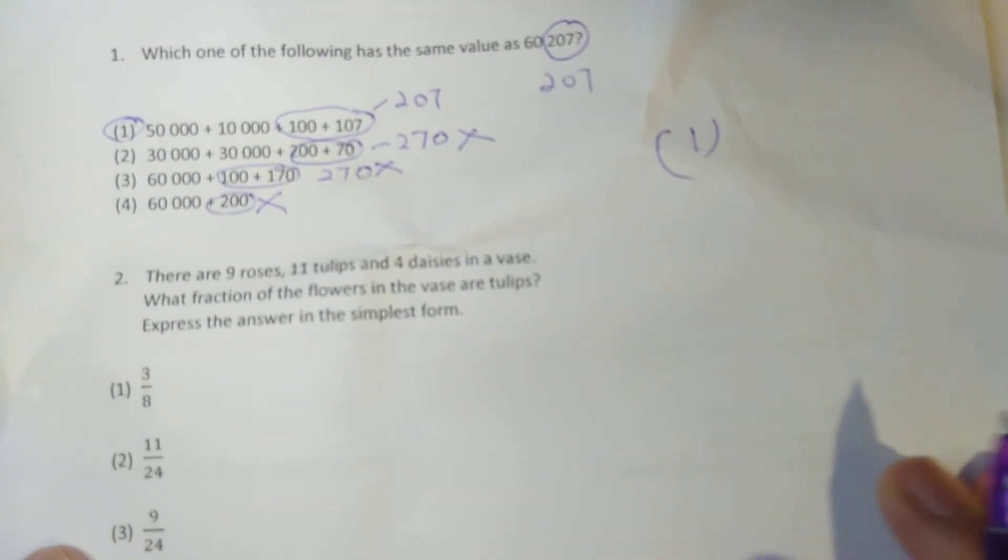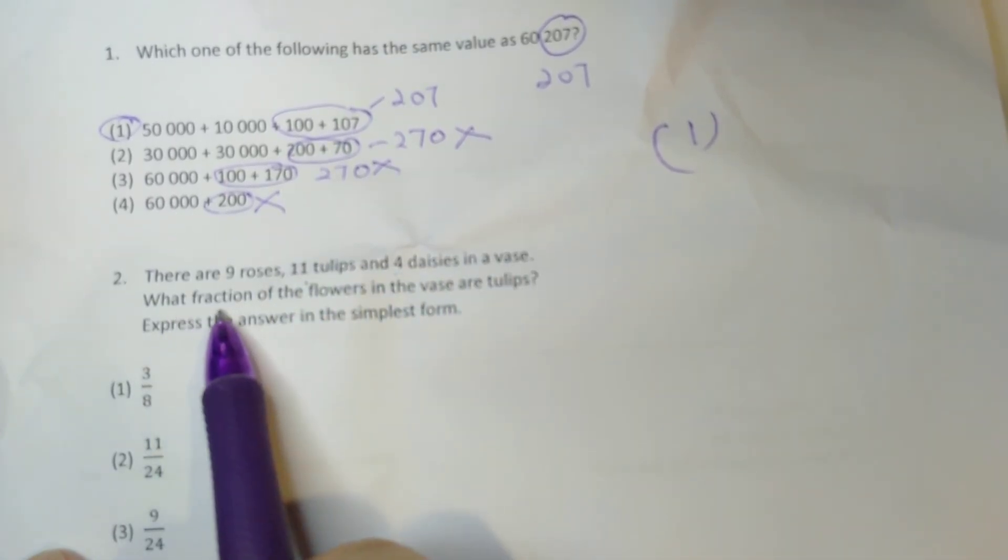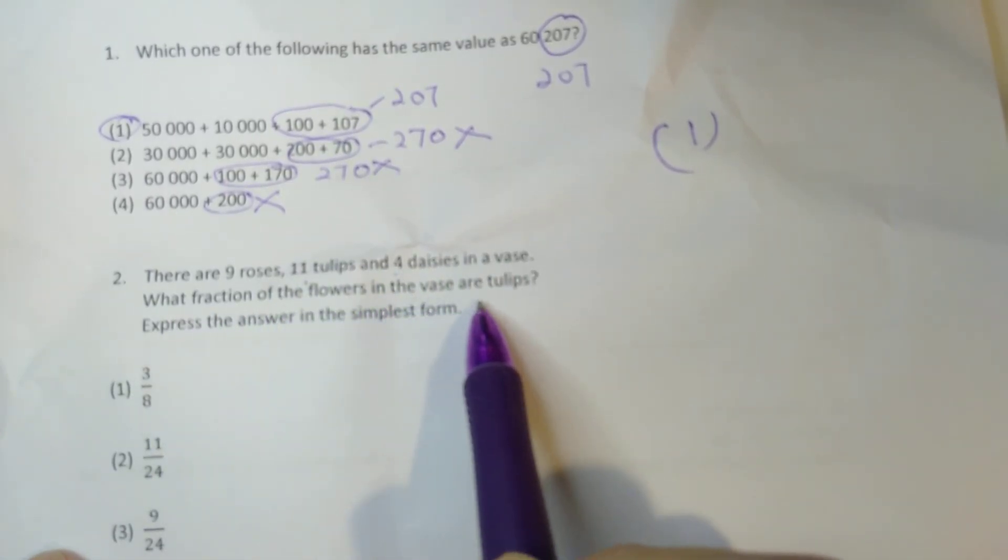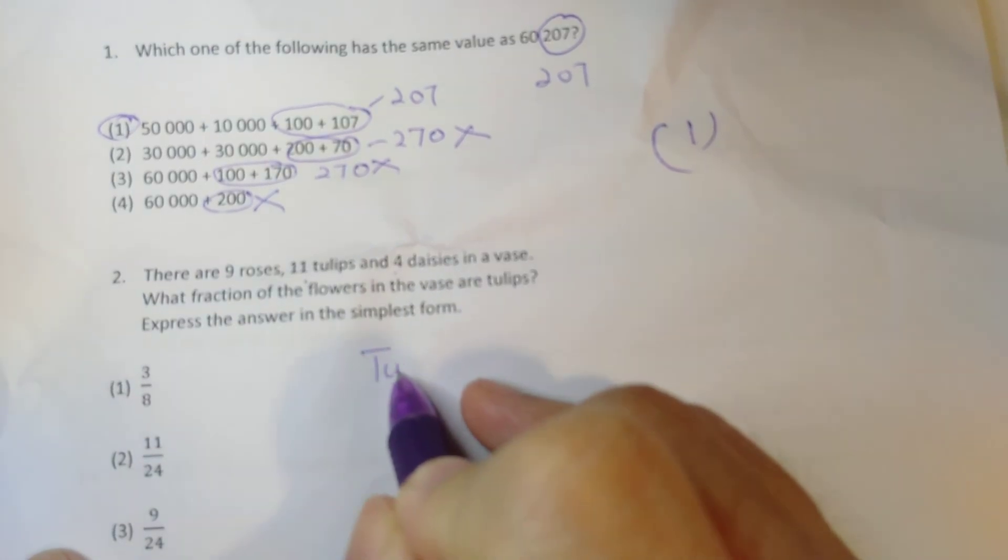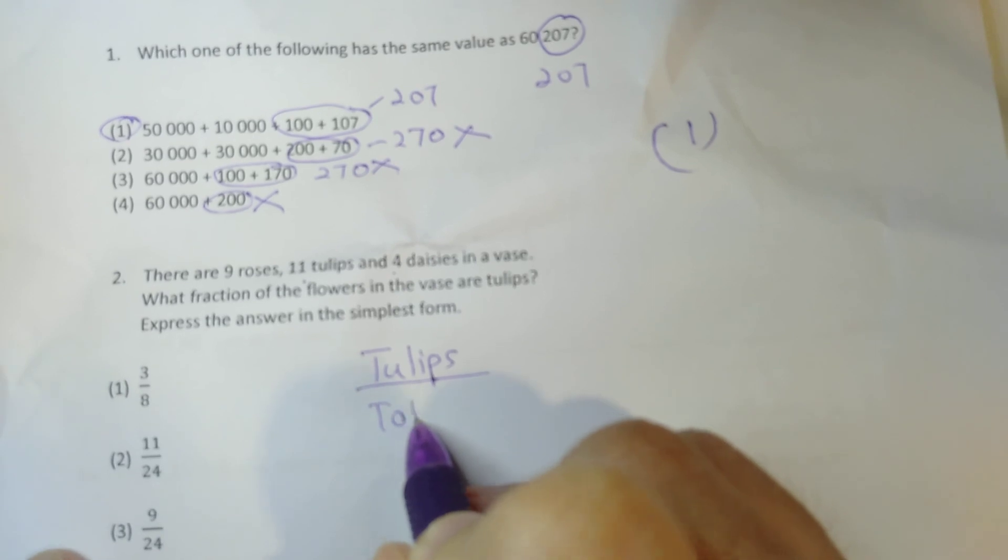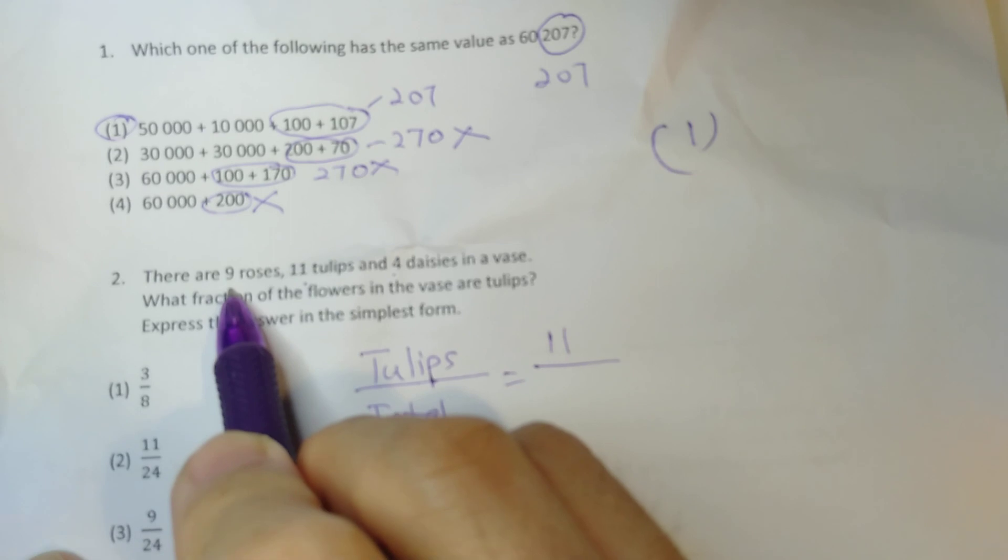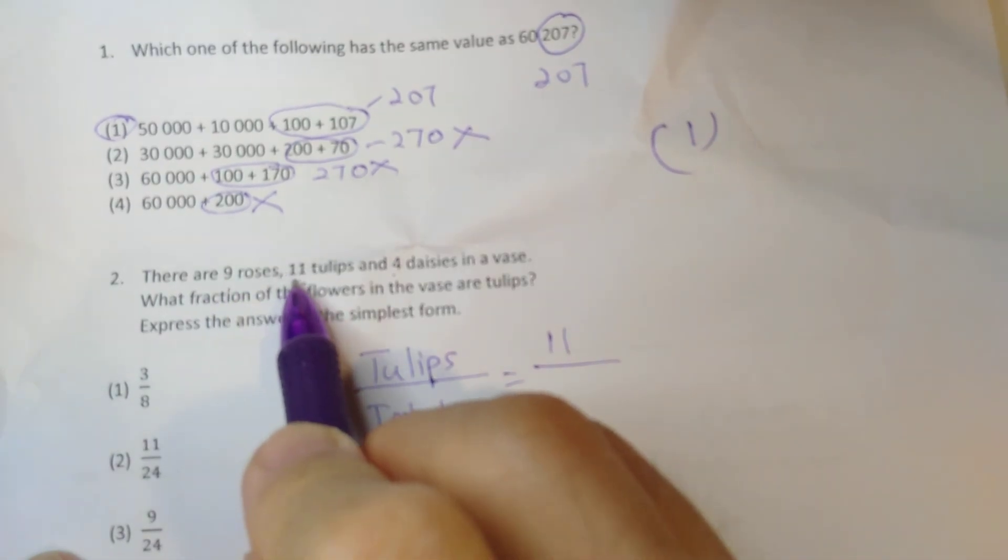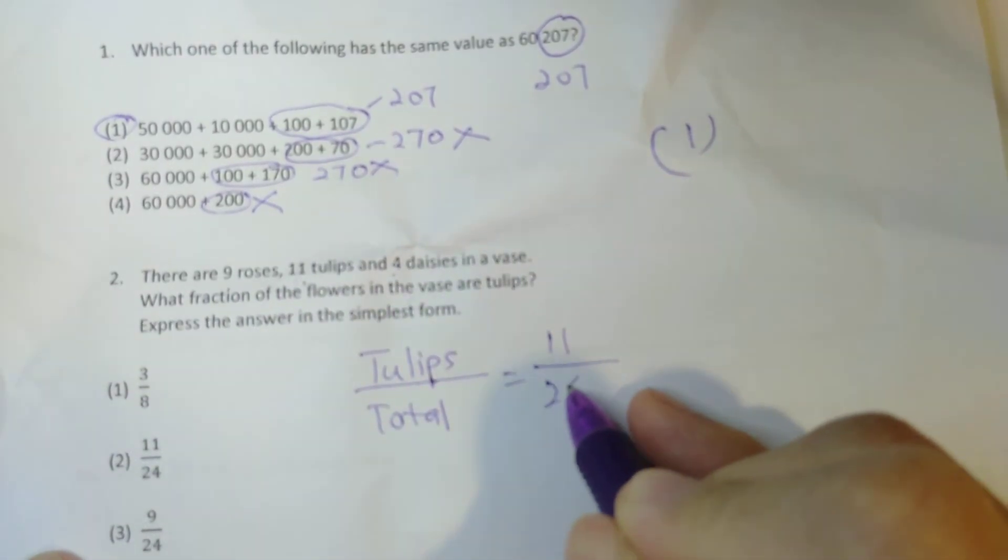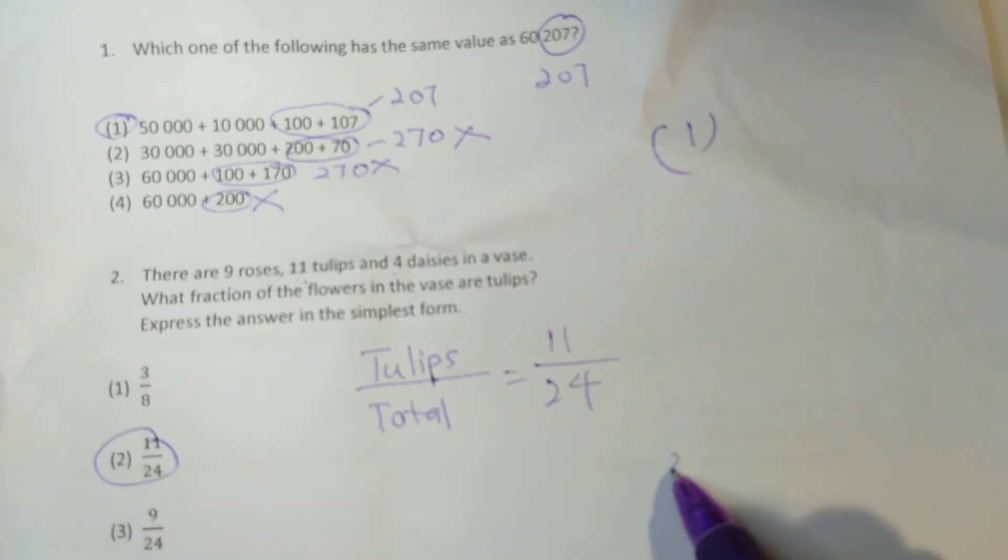Next one. There are 9 roses, 11 tulips, and 4 daisies in the vase. What fraction of the flowers in the vase are tulips? So we're looking for a fraction of the flowers that are tulips over the total number of flowers. There are 11 tulips. And total 9 plus 11 is 20. 20 plus 4 is 24. So the fraction of the flowers that are tulips is 11 divided by 24. This is the answer, number 2.